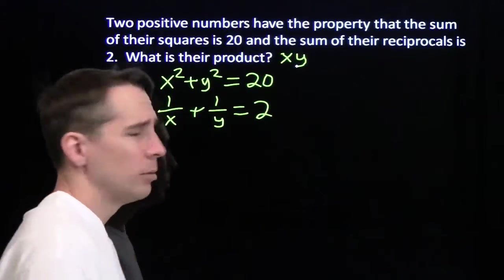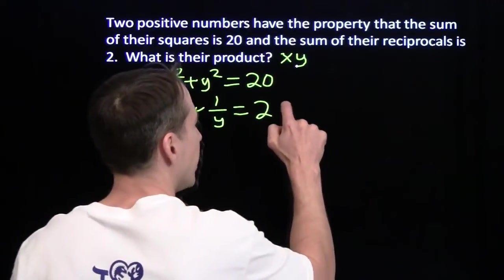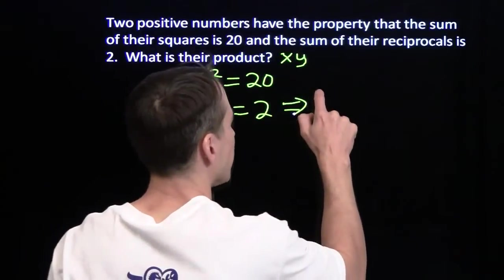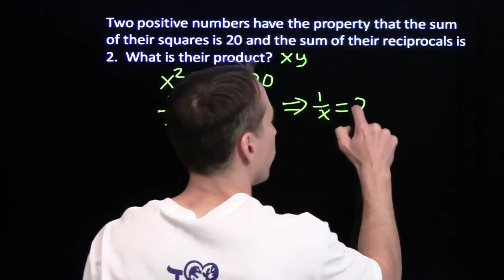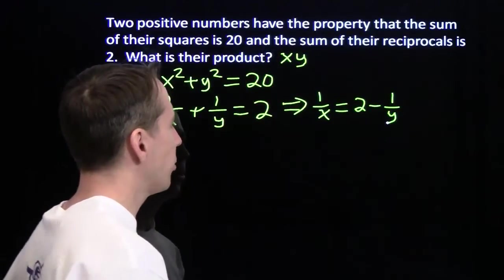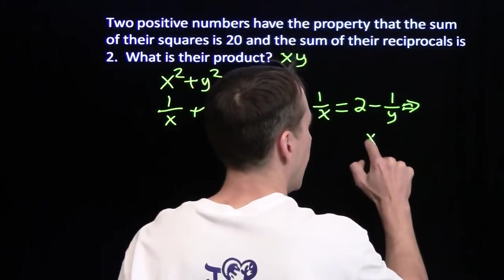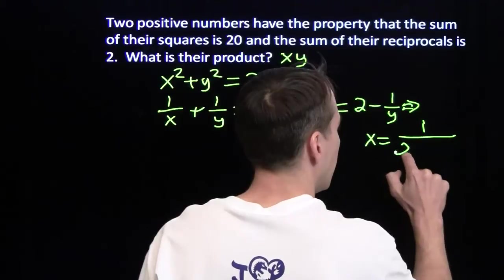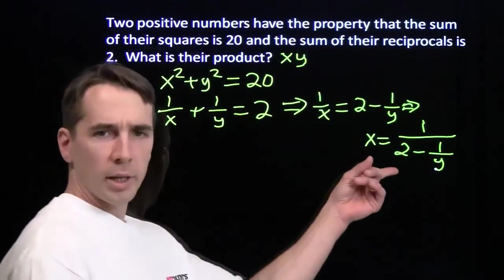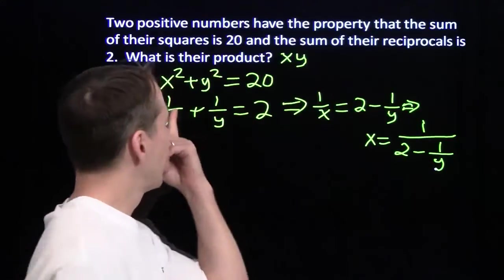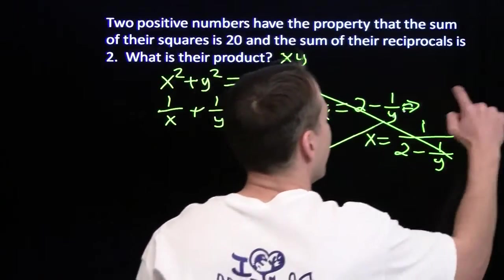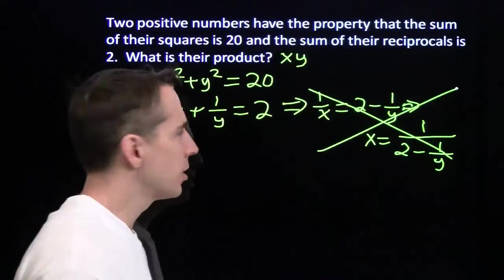I mean, we could do some substitution here, right? Just one of our common strategies in algebra problems. I'm going to solve this equation for x in terms of y. First I'll subtract 1 over y from both sides. I'll have 1 over x equals 2 minus 1 over y. And I can take the reciprocal of both sides of that, and this tells me that x is the reciprocal of...oh, boy...well, it gives me x in terms of y, and I can substitute that in up here and get...life's too short for that. That's going to take forever.